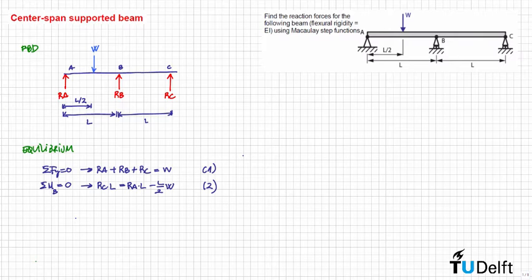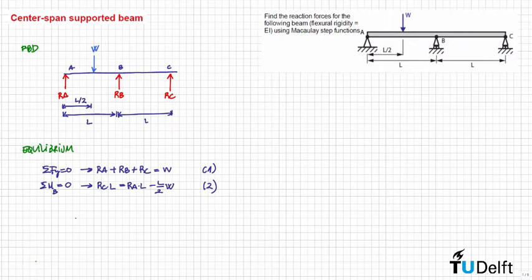We need to look for an additional equation in order to solve it. So we need to look at the deformation of the beam and find a boundary condition that provides a new relationship between the reaction forces. The problem requires us to use Macaulay's step function, so we will calculate the distribution of moments for an arbitrary point x, then the expressions for the slope, and finally the deflection of this beam.